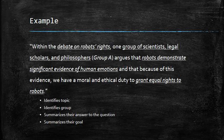Given those two major sides, we could phrase a statement like this: within the debate on robots' rights, one group of scientists, legal scholars, and philosophers argues that robots demonstrate significant evidence of human emotions, and that because of this evidence, we have a moral and ethical duty to grant equal rights to robots. Notice how this statement identifies the topic being investigated, identifies the specific group rather than just 'Group A,' summarizes their answer to the question of whether robots have human emotions, and summarizes their goal and proposed course of action.